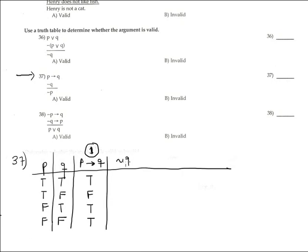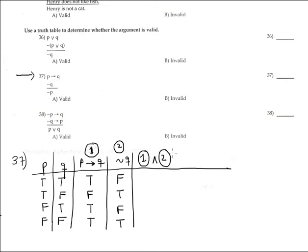Premise number 2 is negation Q. Negation Q is the completely opposite true value — it's false, true, false, and true. Now let's do the conjunction between premise number 1 and premise number 2. The conjunction is true only when both inputs are true. The rest is false because we have at least one false.